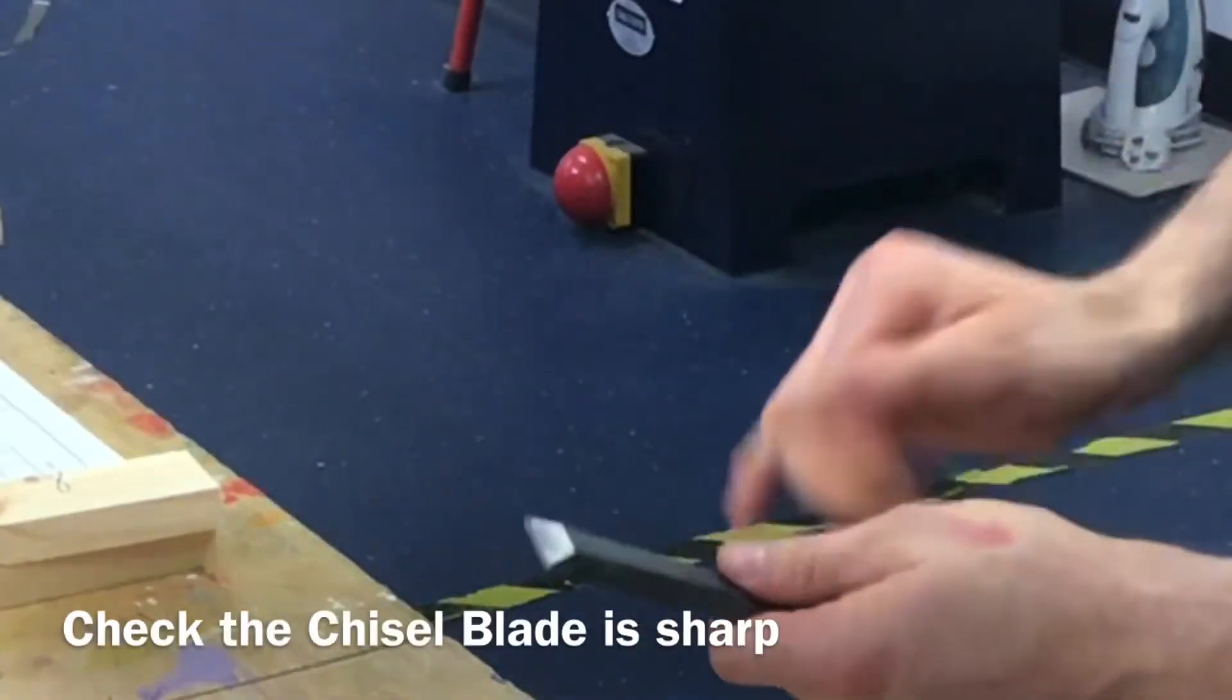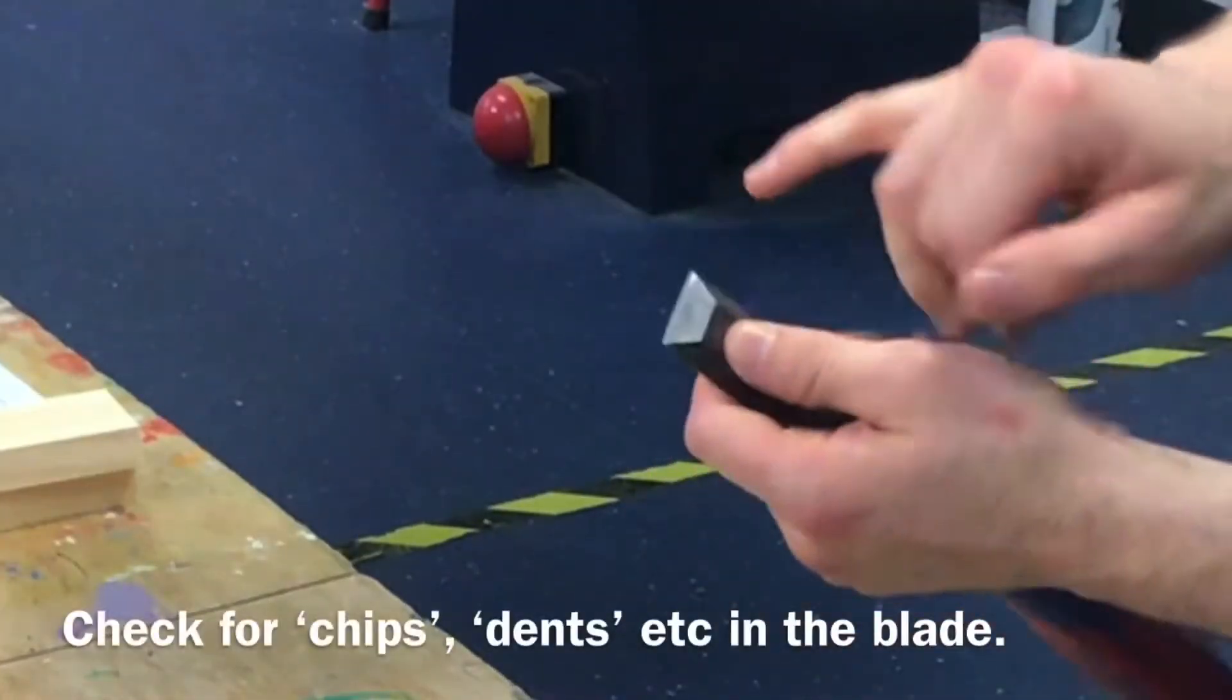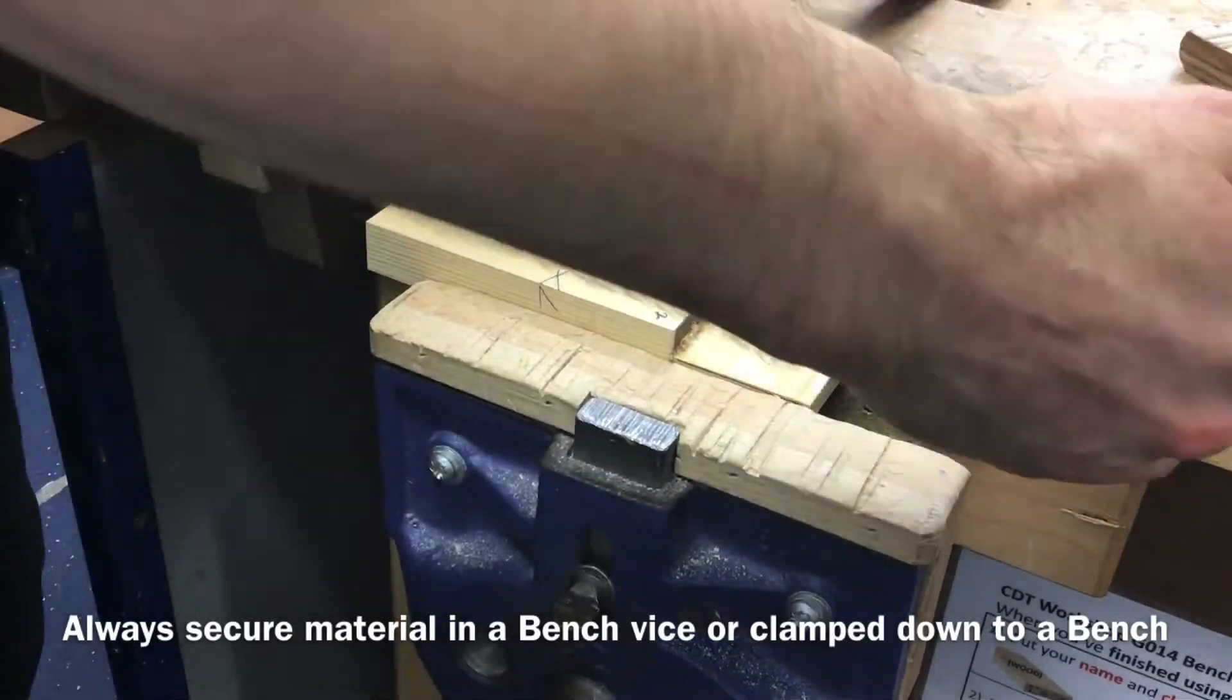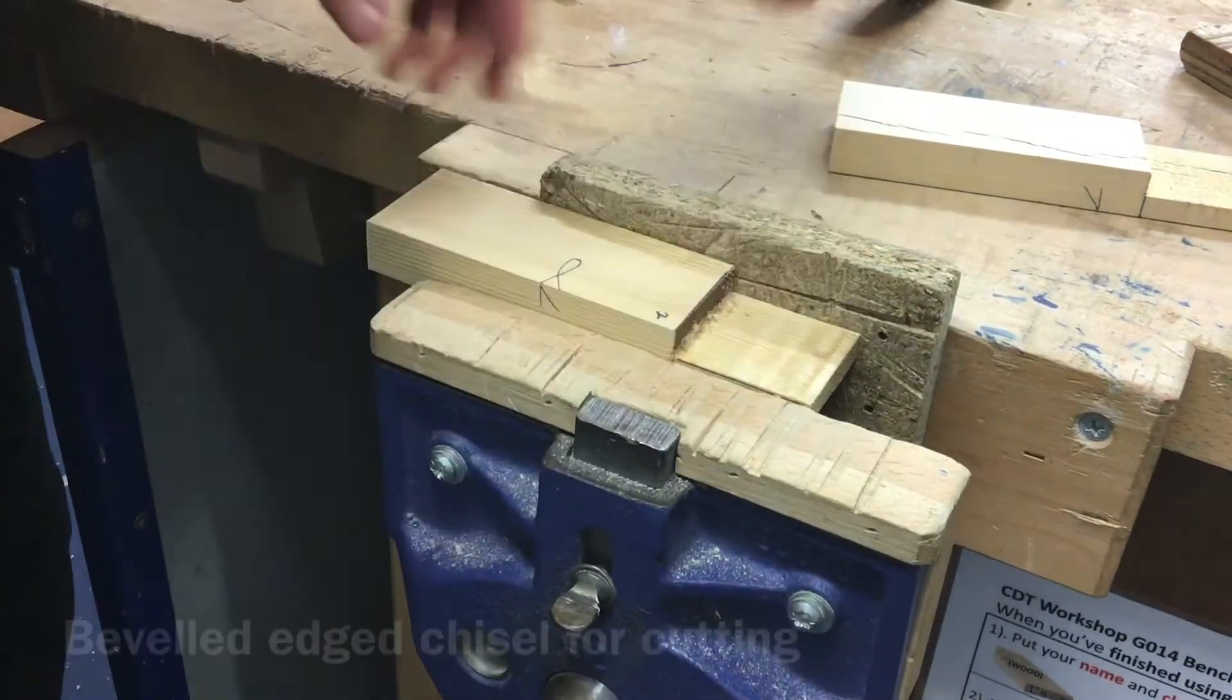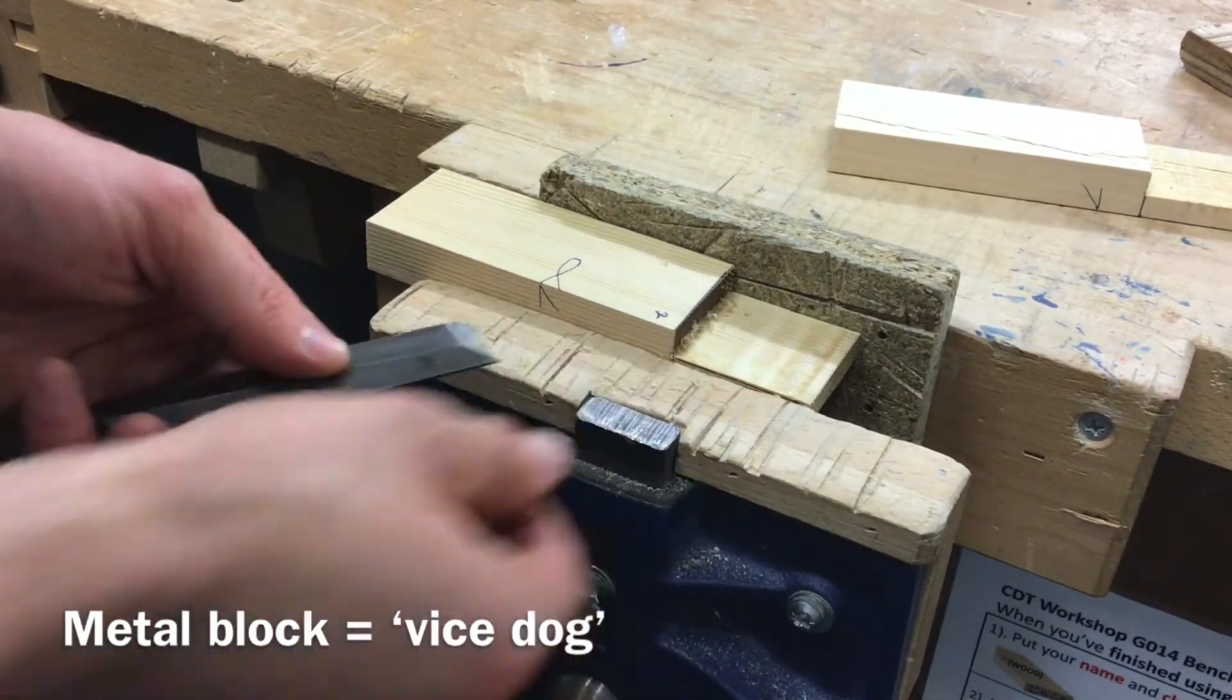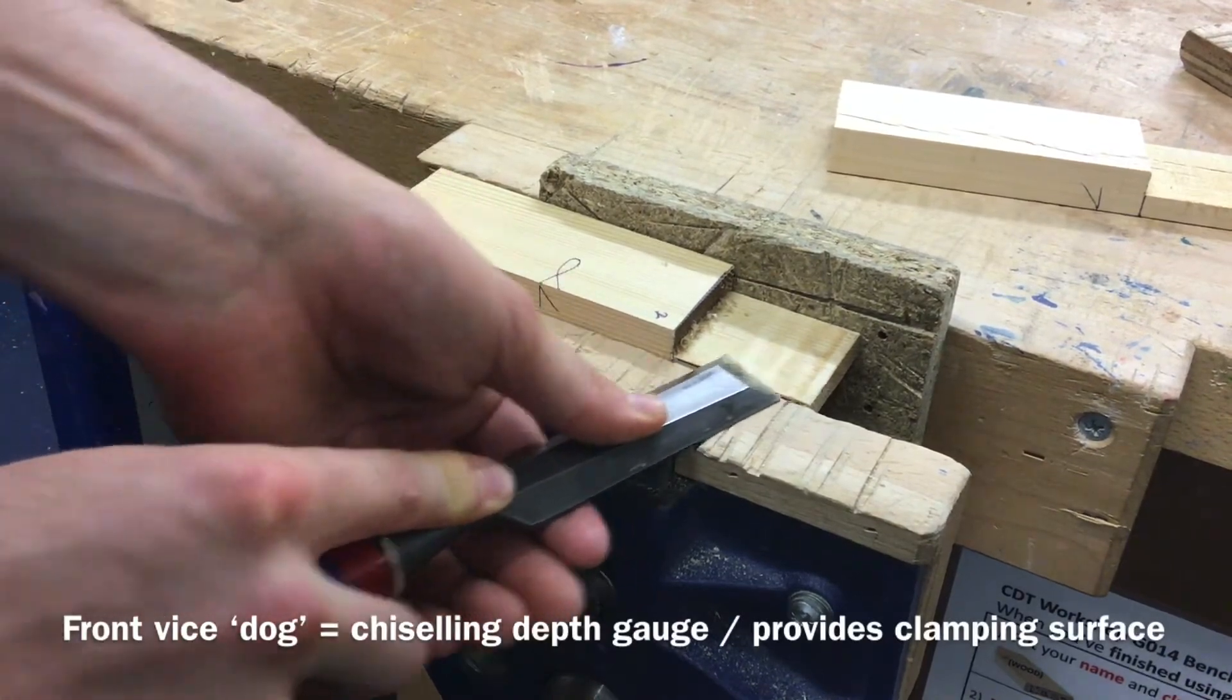First thing we do with our chisel, check the quality of the chisel, check the tool is sharp and doesn't have any blemishes or breaks on it. That's very important - piece of sacrificial material behind the joint that you're cutting in the vise. Beveled edge chisel. You can use this top metal section, which is a little depth gauge on your bench vise, to ensure you get consistent chiseling.